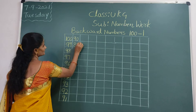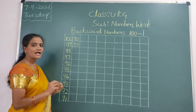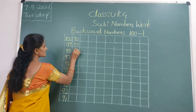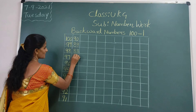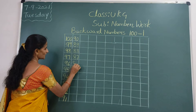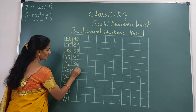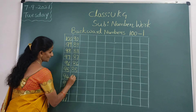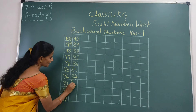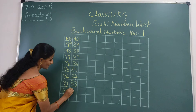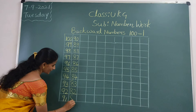89. Reverse numbers, backward numbers. 88, 87, 86, 85, 84, 83, 82, 81.